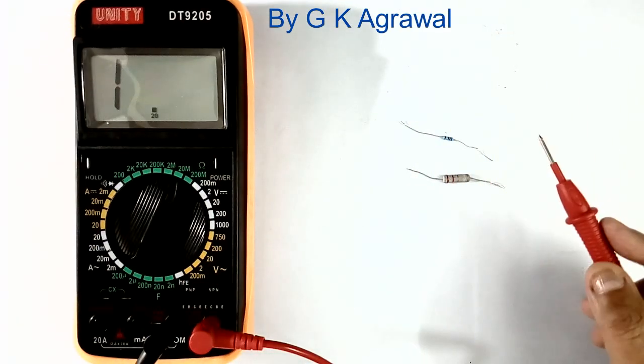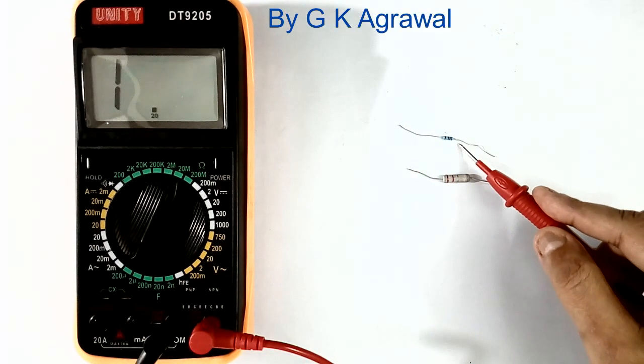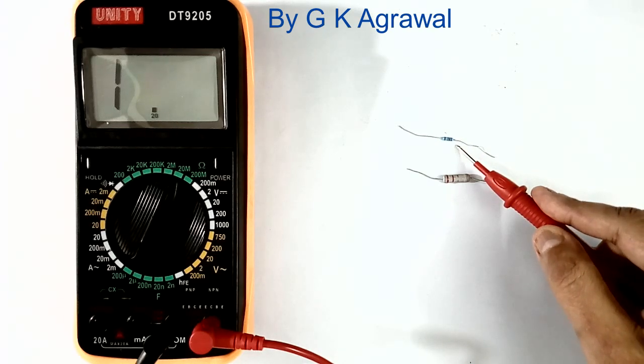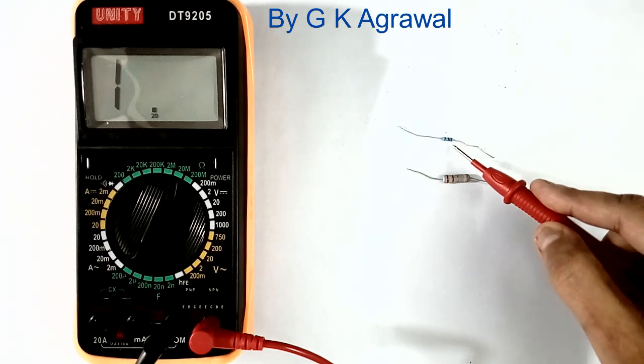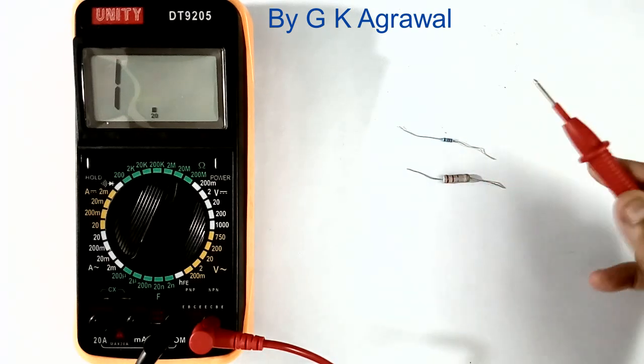Now I have with me two resistors. One is high value, this is more than 2 mega ohms. This is very low value, about 2 ohms. First I will measure 2 mega ohms and see what is the problem.